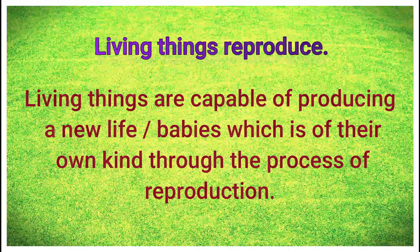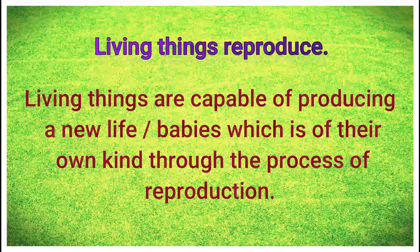Living things can reproduce. Living things are capable of producing new life — their babies are of their own kind. Through the process of reproduction, you can see here the babies of different animals.